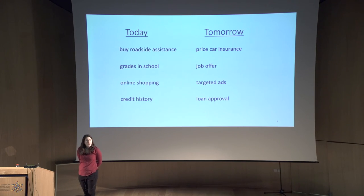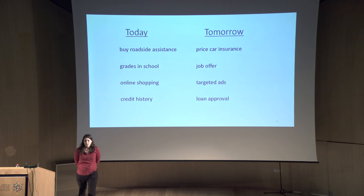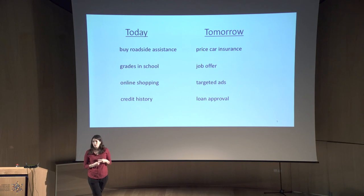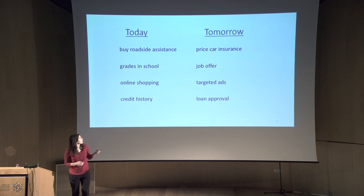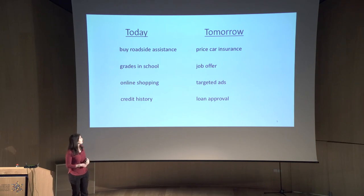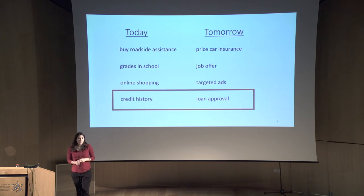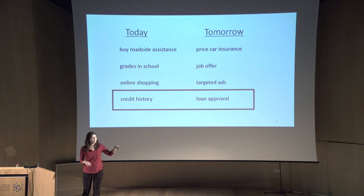There's a whole bunch of different cases in practice that can fall into this framework. Really, any time where the firm tomorrow is going to take a risk on the consumer can be captured here. For example, maybe if you buy AAA, then you should be given lower car insurance prices; maybe if you're a good student, then you get jobs, and so on. Today I'll phrase things in terms of shopping choices and loans, but really — pick your favorite example.